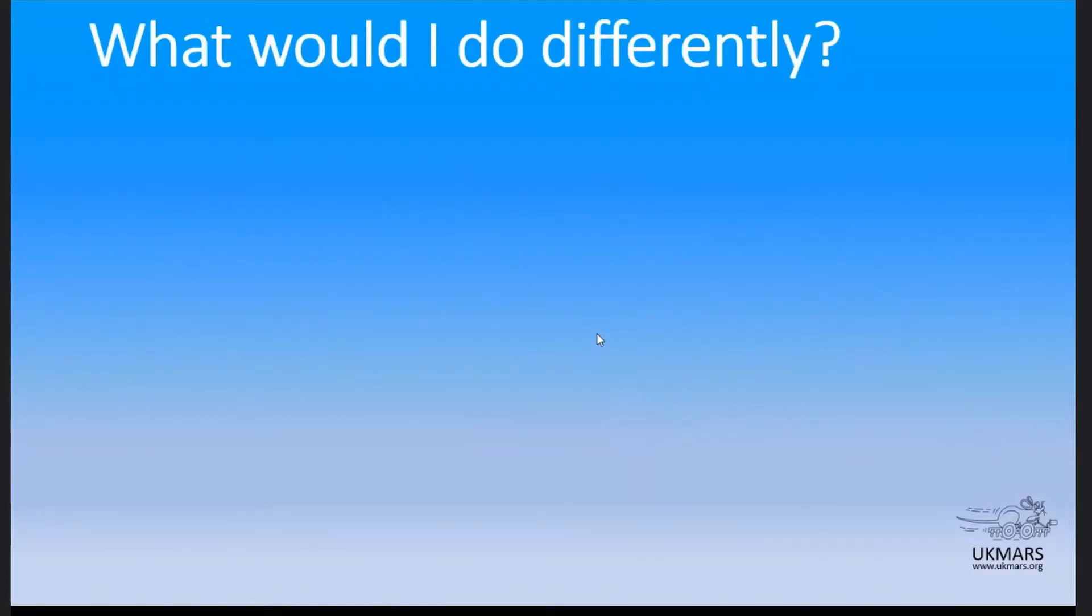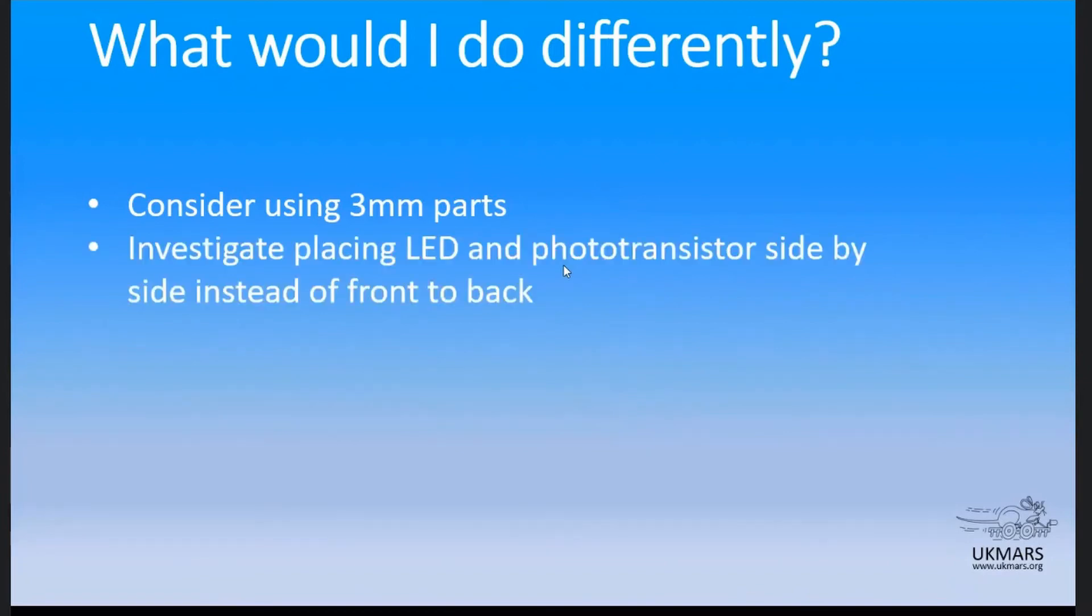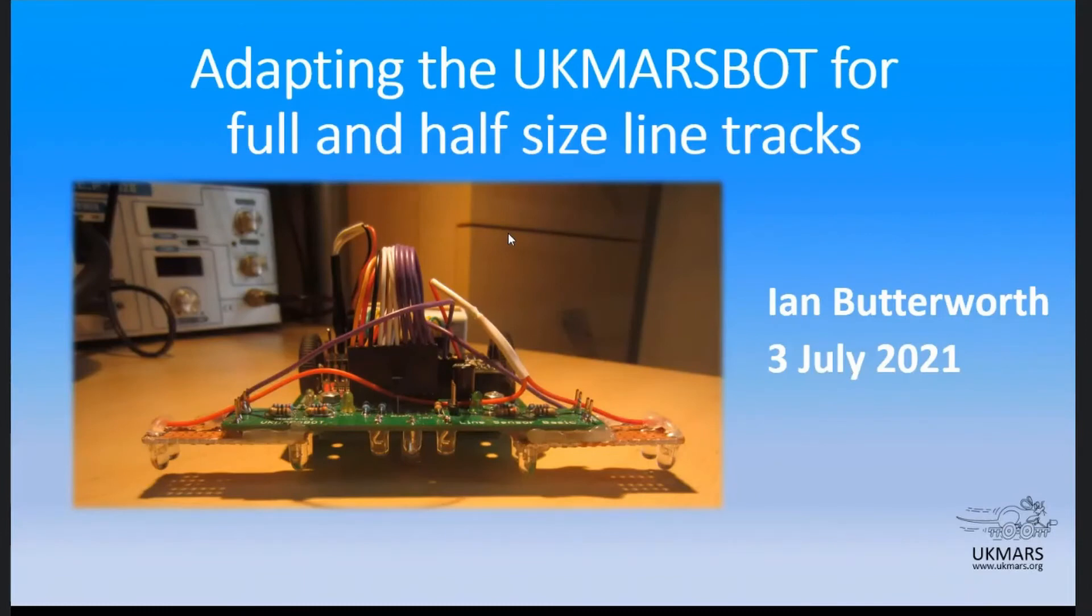Really only to wrap up with the classic stuff of what would I do differently. There are a few things. One is I'd think about using three millimeters instead of five millimeter parts and then the butchery on the bottom of the board wouldn't have to be quite so bad. The other option again is instead of having the marker detectors front to back you could actually put them side by side which again would reduce the infringement on the main board and that might improve things. It turns out that I put the header strips in slightly the wrong place as well so my half size line markers work but they should be looking a little bit further out than they are. Other than that as you can see I think it manages to do the job. I think that's me done. Any questions?